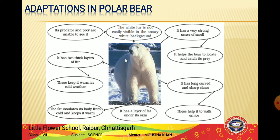Polar bears have white-colored fur. Since snow is also white, they are not easily visible against the snowy white background. This protects them from their predators and also helps them in catching their prey - it helps both in hiding from hunters and in hunting.